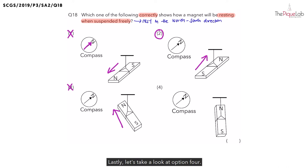Lastly, let's take a look at option four. Now in which direction will the magnet come to rest to? We see that the magnet comes to rest in an upwards direction. Now is this the same direction that the compass needle comes to rest? No. So option four must definitely be wrong. Therefore the correct answer should be option two.